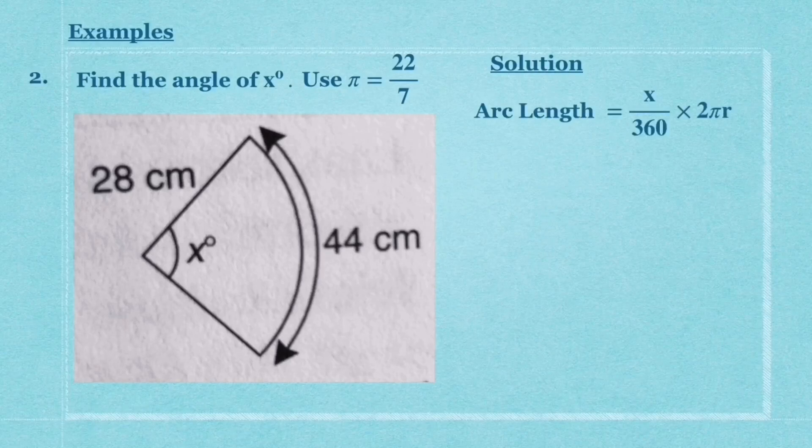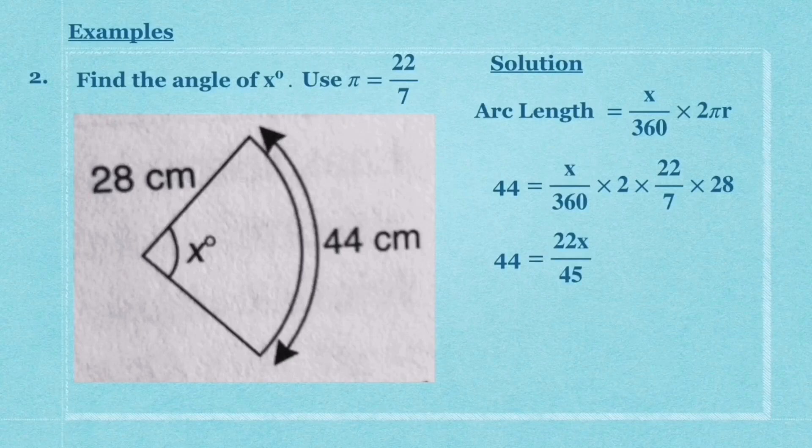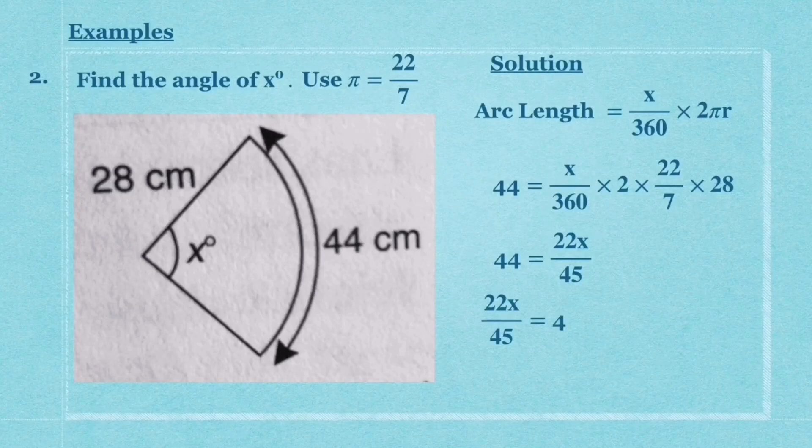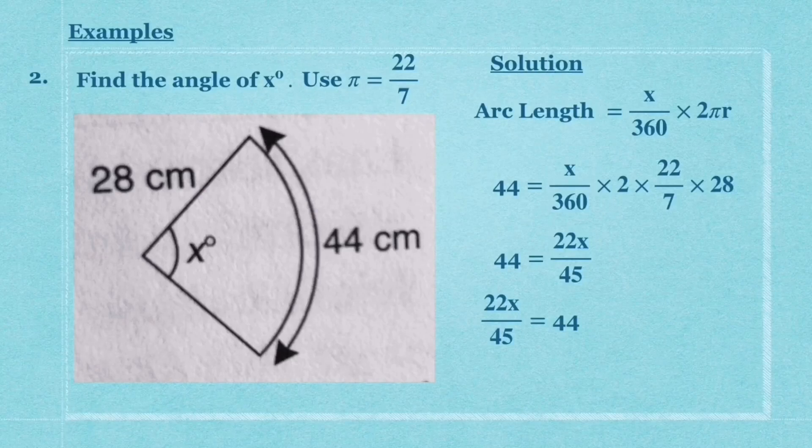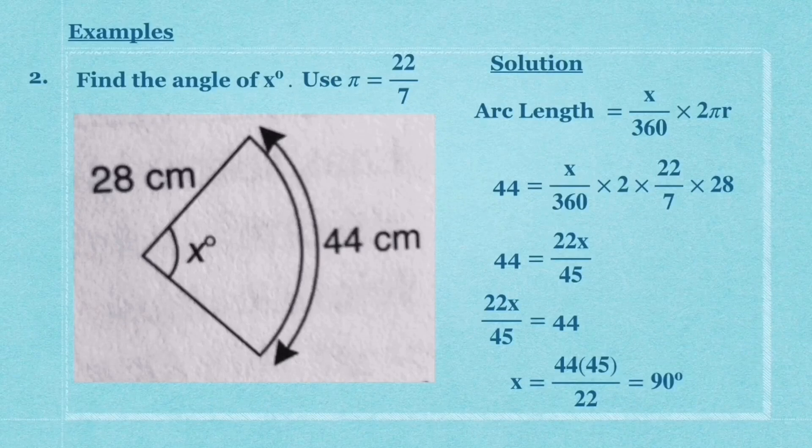Just use the same formula and substitute the arc length, which is 44 cm. The x is not given, so use your calculator: 44 = x/360 × 2 × 22/7 × 28. Simplifying, you will get x/360 = 22/45. Now change the position and cross multiply: x = 44 × 45/22. Then you get 90 as the final answer, 90 degrees.